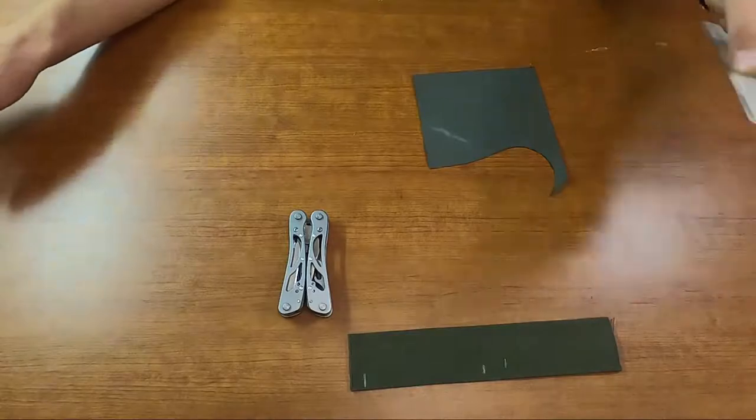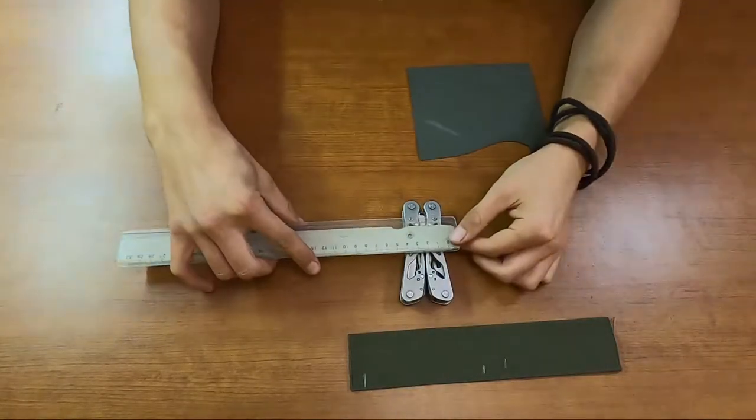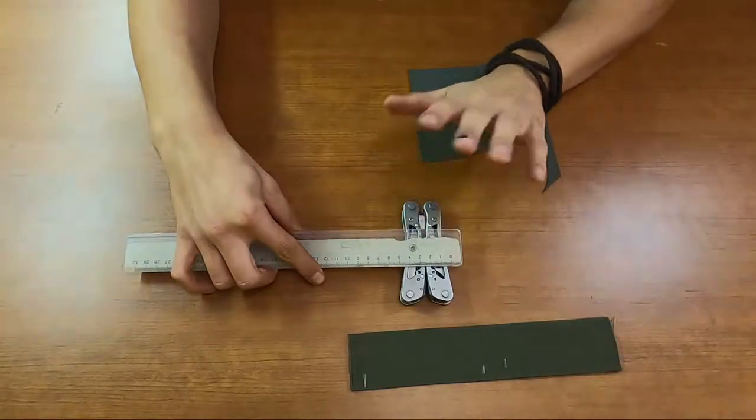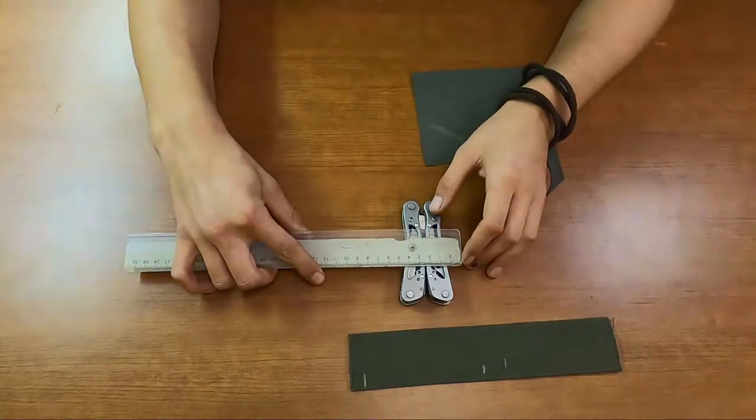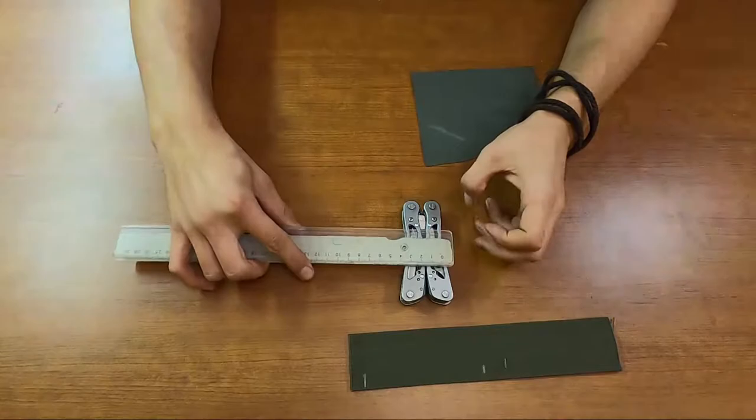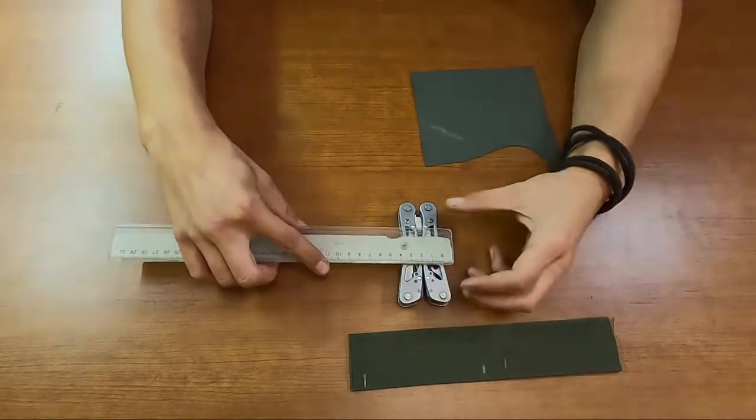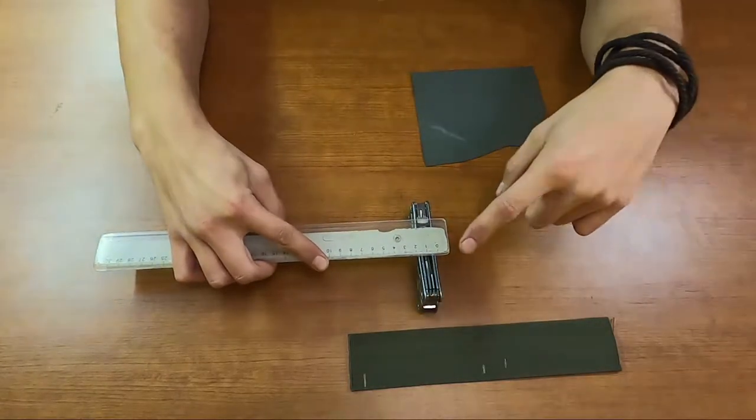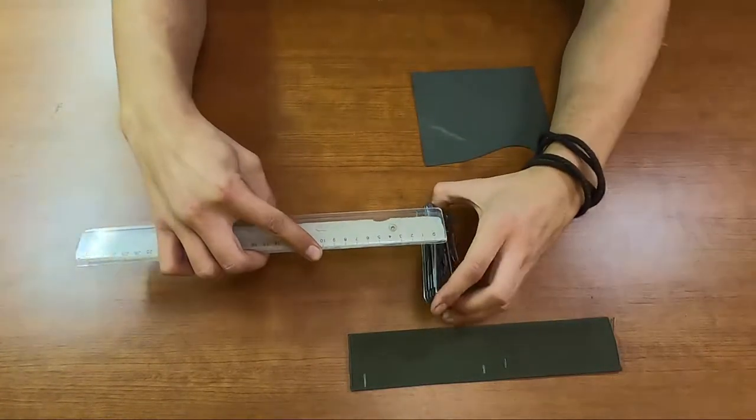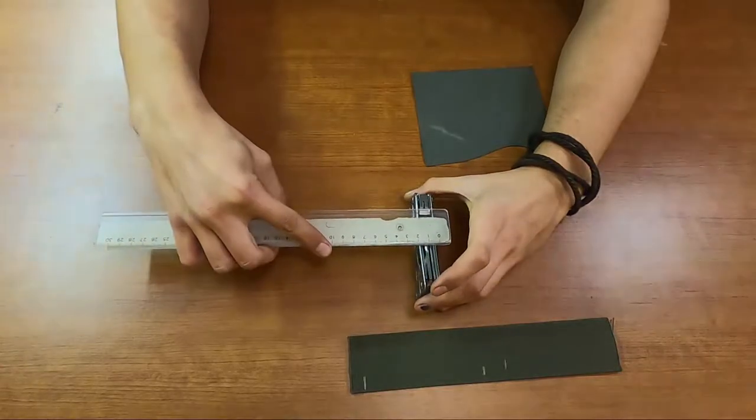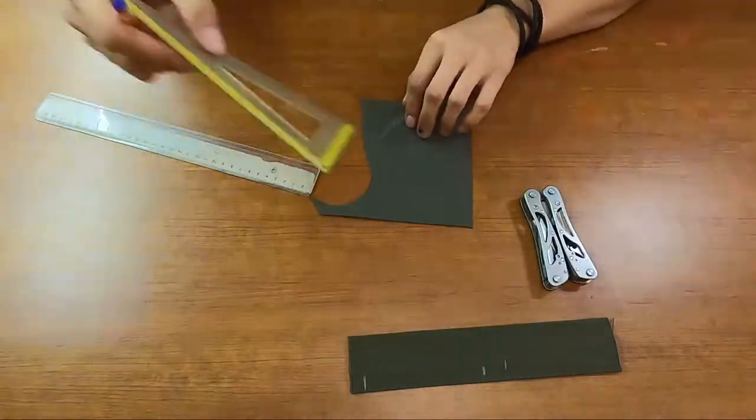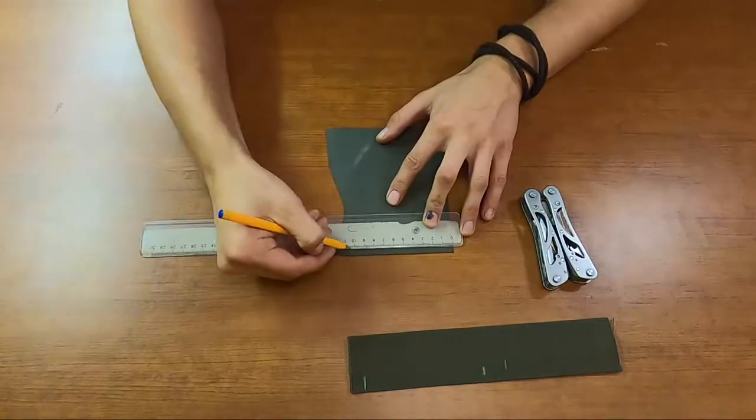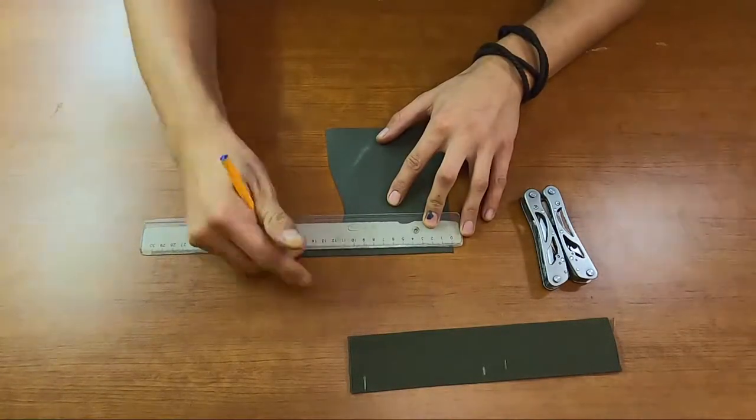Now we have to prepare the second part of our pocket. My multi-tool has 5 cm width and 2 cm thick, so we need 9 cm of fabric plus 1 cm extra on both sides to fold the edges. I need to check that my fabric has a right angle. It has, so I mark 11 cm.